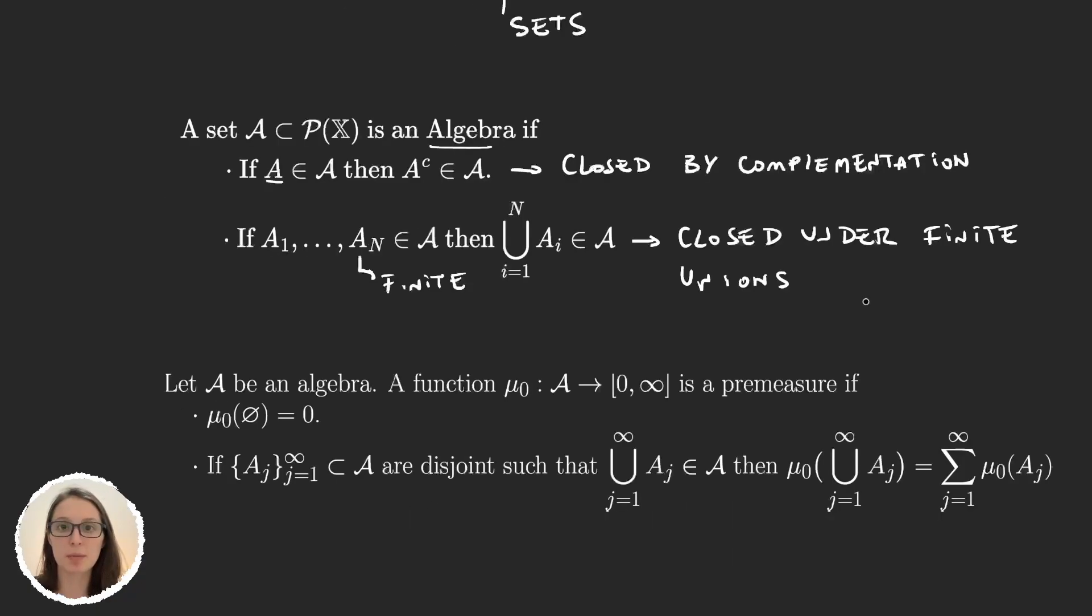Remember that measures were defined on σ-algebras. Outer measures were super weak and they were defined over parts of x. And now premeasures are, as I said, in the middle between outer measures and measures. They are defined over algebras. So we have an algebra A, and the function μ₀ that goes from the algebra to [0, ∞] will be a premeasure if these two things are satisfied. The empty set measures zero. This is the usual one.